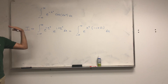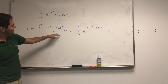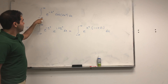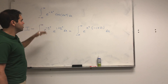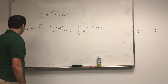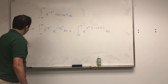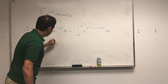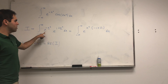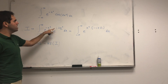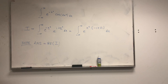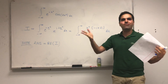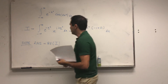Before we continue, I want to remind you that to get our answer from this integral, you just have to take the real part. So note, the answer is just the real part of I, because the real part of this expression gives e to the minus x squared cosine of 2x squared. Therefore, we will calculate complex integrals, but at the end remember that we want to take the real part.